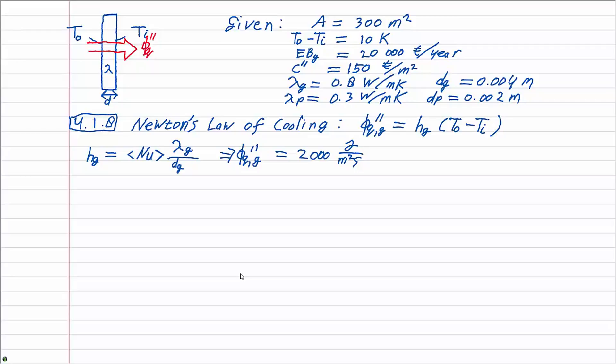The next question follows along the exact same lines but uses the properties of the plastic windows instead of glass. So you'll end up with a heat flux of 1500 joules per square meter second.